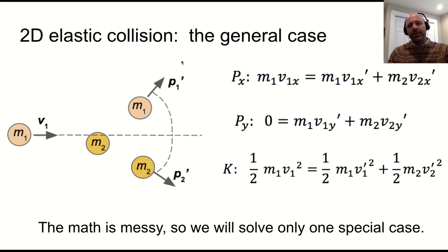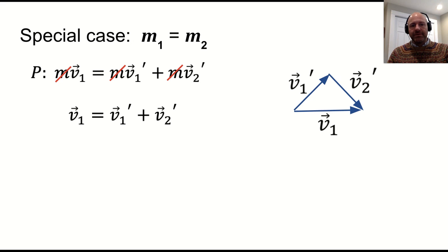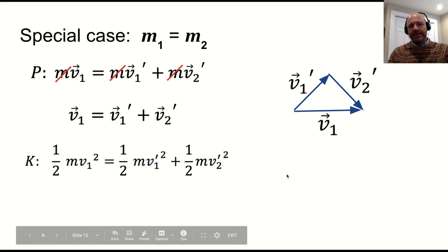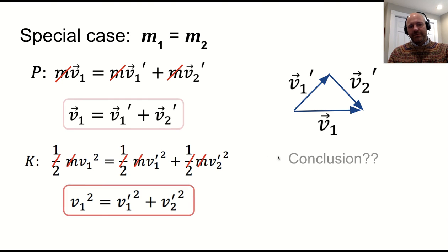The math is very messy. So we're only going to solve a special case where they have the same mass. That way, mass cancels out. And if we look at the velocity vector equation, then we get something very simple. We can then cancel out the one-half and the m's in all of these and we get another simple relationship.